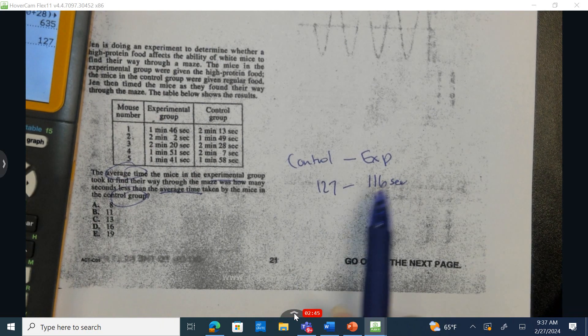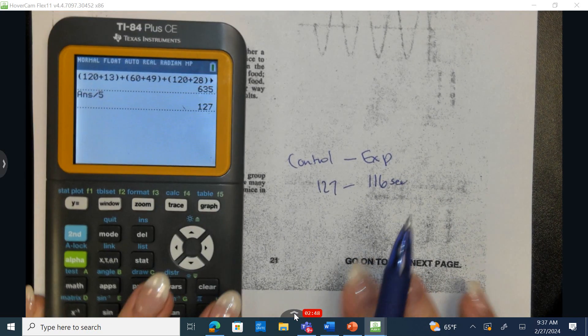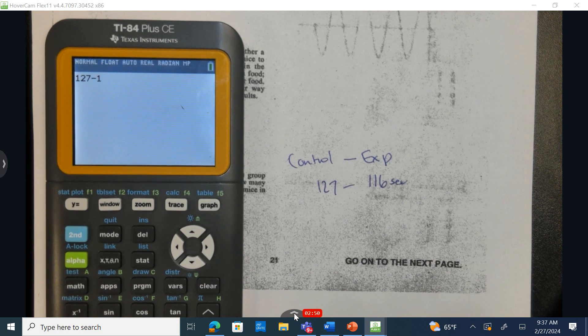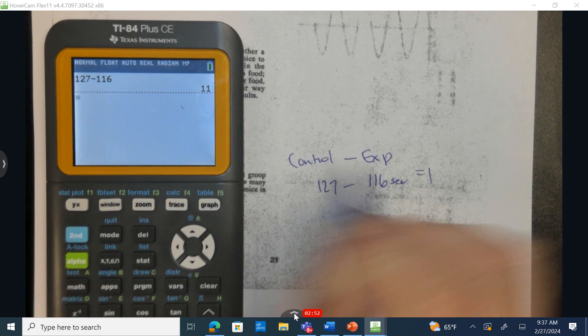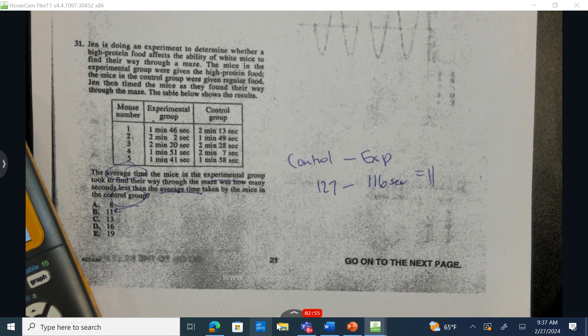So how much less is the experimental than the control? Let's subtract them. 11 seconds. Correct answer is B. Thank you.